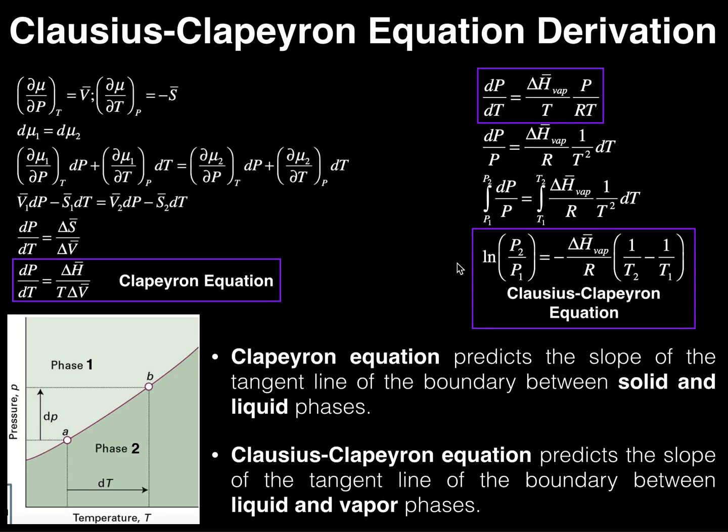But to conclude this video, hopefully you understand where these two equations are derived from, how they arise. They have to do with a phase diagram. You actually use this to conceptualize the derivation. And then the Clapeyron equation, normally in this form, we're going to use it to predict the slope of the tangent line between solid and liquid phases. And the Clausius-Clapeyron equation generally is going to be used for the same thing, but for liquid and vapor phases, because gases do not have a defined volume. They're much, much larger in volume than liquids or solids.